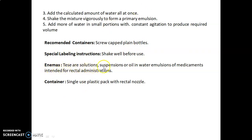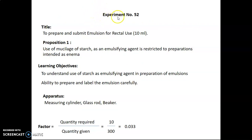Enemas (NMRs) are solutions, suspensions, or oil-in-water emulsions of medicaments intended for rectal administration. The container is a single-use plastic pack with a rectal nozzle. Experiment number 52 — the title is 'To prepare and submit emulsion for rectal use, 10 ml.' Note: the use of starch as an emulsifying agent is restricted to preparations intended as enemas. The learning objectives are to understand the use of starch as an emulsifying agent and to be able to prepare and label the emulsion carefully.